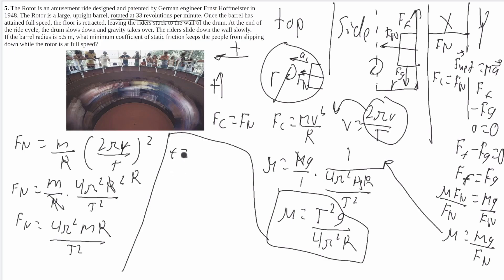And so it tells us that the frequency is equal to 33 revolutions per minute. We can multiply this by 1 minute over 60 seconds, which is just 1 over 1. And we'll get a frequency of 0.55 revolutions per second.